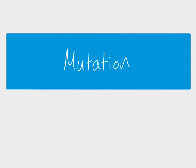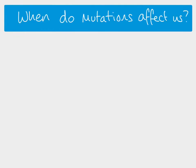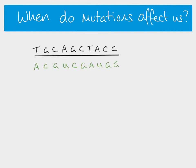In this video we are looking at mutations in terms of the actual changes to the genetic code and how that can affect the amino acid sequence in proteins. Mutations aren't always going to affect us. If you've got a sequence of DNA here, this sequence of DNA is going to be transcribed into a sequence of RNA, and this RNA will then be translated into a series of amino acids. So we've got our codon and then our amino acid.